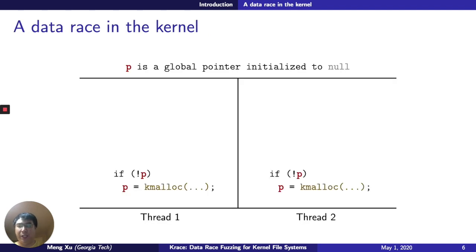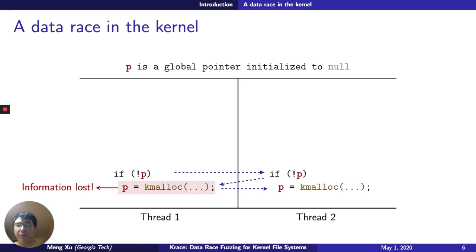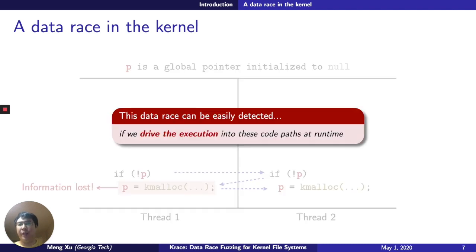Here is one example we found in the kernel file systems. If execution flows from thread 1 to thread 2 and back, we see that pointer p is assigned two values, where the first assignment is already lost, meaning we lose control of the chunk of memory allocated by kmalloc on the left thread. This kind of data race can be detected if we drive execution into this code path at runtime, but the difficult question is how do we get execution into this code path in the first place.